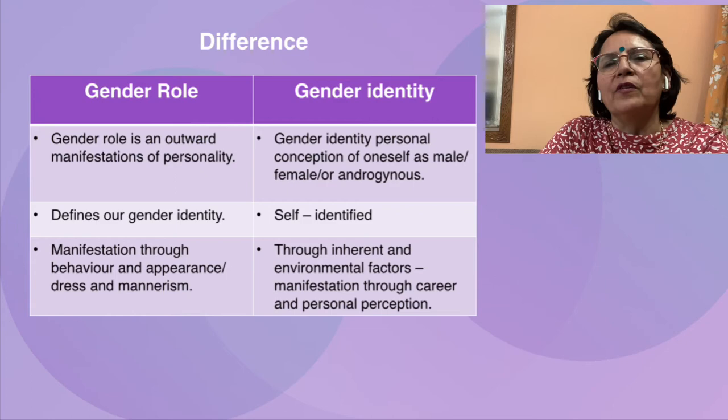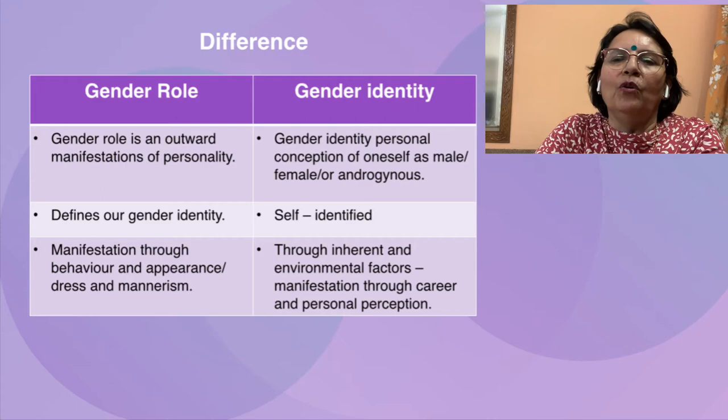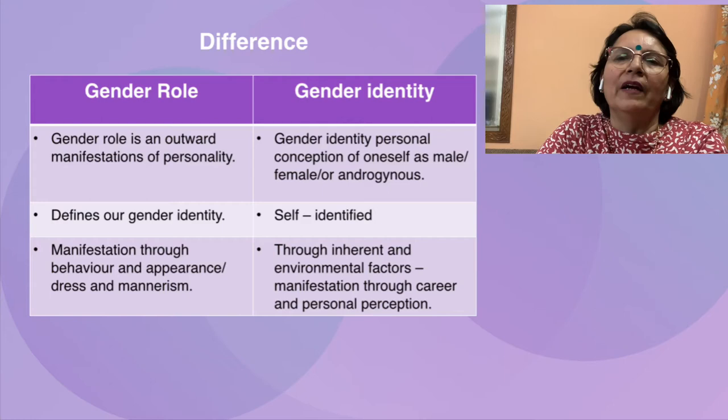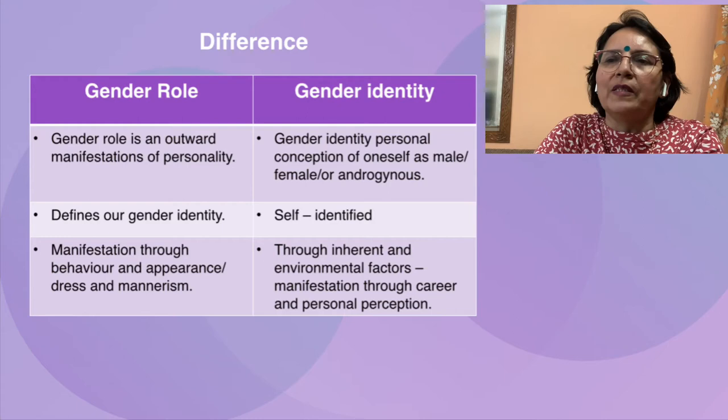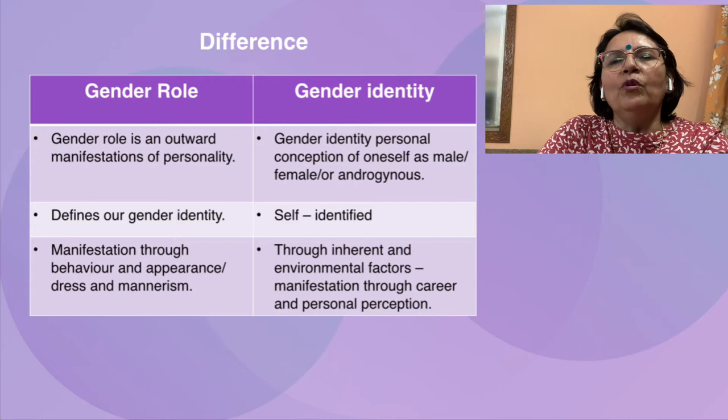Gender role is what you say or do, from which other people make up their own version of your gender identity — it is an outward manifestation of one's personality. Whereas gender identity is the personal conception of oneself as being male, female, or androgynous. Gender role defines your gender identity, whereas gender identity is self-identified.